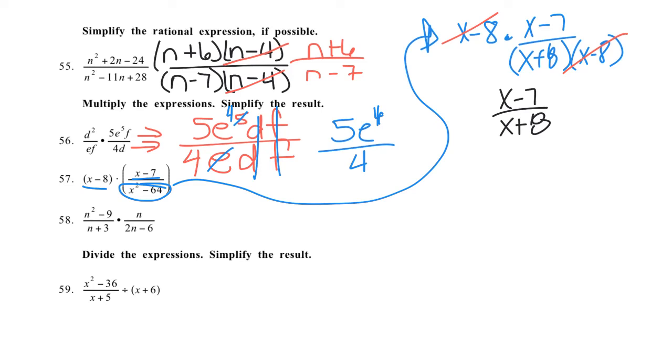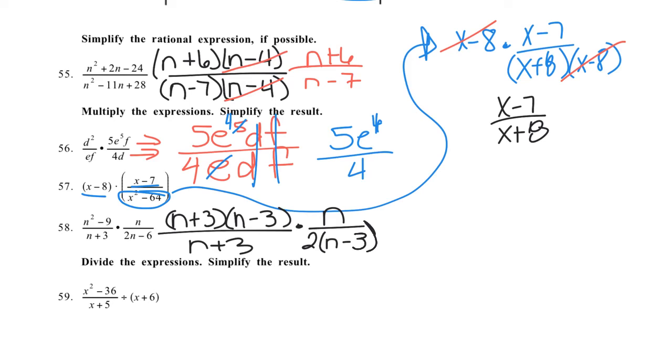And number 58, we're going to factor the n squared minus 9, that's n plus 3, n minus 3 over n plus 3, times n over 2 times n minus 3. Factor out the common factor on 2n minus 6. The n plus 3s divide out. Remember I can divide vertically and diagonally. Horizontal is multiplication, so I need to divide diagonally. So I can also divide out the n minus 3s, and my final answer is just n divided by 2.